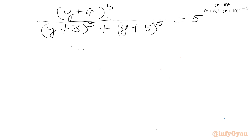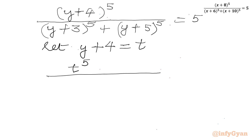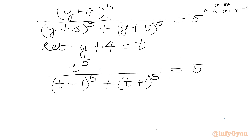Now I will use our second substitution. Let's say y+4 equal to t. So I can write our equation in variable t: t^5 over [(t-1)^5 plus (t+1)^5] equal to 5. Now I will use binomial expansion for (t+1)^5 and for (t-1)^5, then calculate our denominator by adding both expansions.